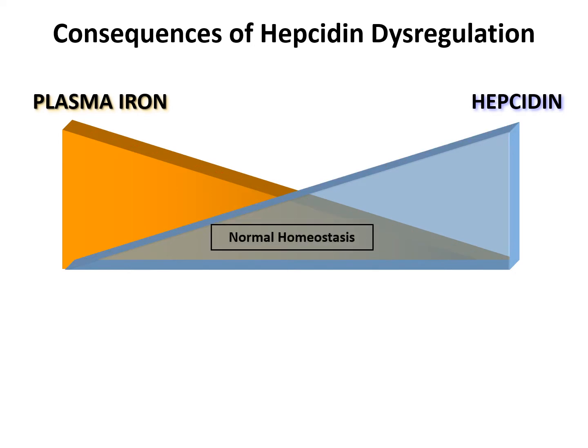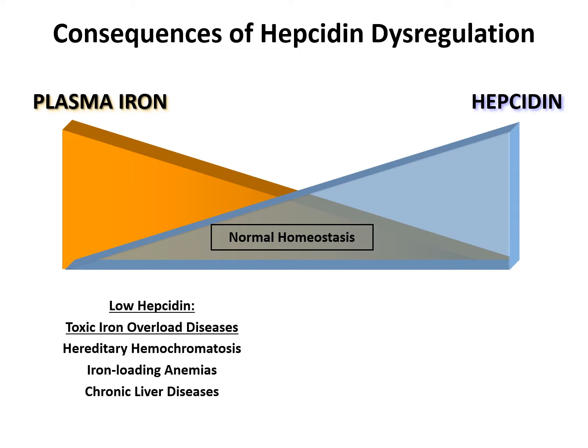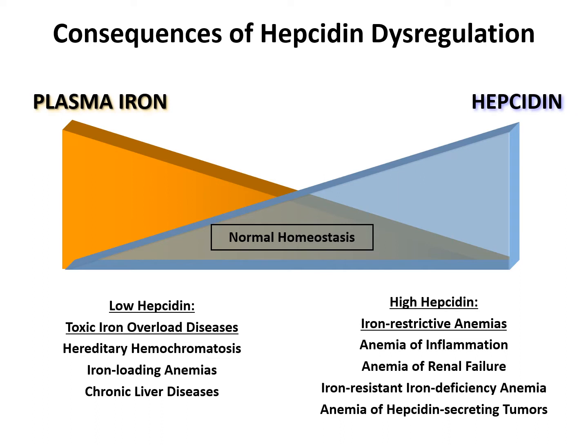Normal iron homeostasis is achieved when there is a balance of appropriate levels of plasma iron and hepcidin for physiological needs. However, when hepcidin regulation is disrupted, iron-related diseases occur. Inappropriately low hepcidin levels lead to toxic iron overload, including diseases such as hereditary hemochromatosis, iron-loading anemias, and chronic liver disease. On the other side, when hepcidin is inappropriately high, iron-restrictive anemias develop, including anemia of inflammation, anemia of renal failure, IRIDA, and anemia of hepcidin-secreting tumors.